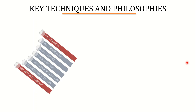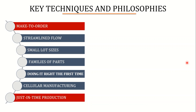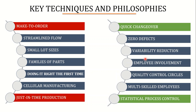The key techniques and philosophies behind WCM are mostly related to lean manufacturing and continuous improvement systems, such as make-to-order and just-in-time production, which lead to lean manufacturing and streamlined flows with no faulty procedures, achieving 100% efficiency. Other techniques include small load sizes, families of parts, doing it right the first time, cellular manufacturing, quick changeovers, zero defects, variability detection, employee involvement, quality control circles, multi-skilled employees, and statistical process control.